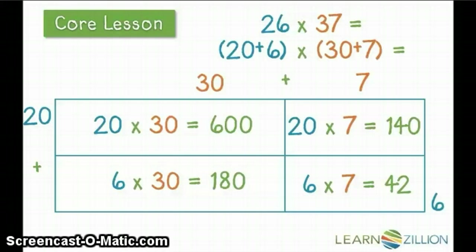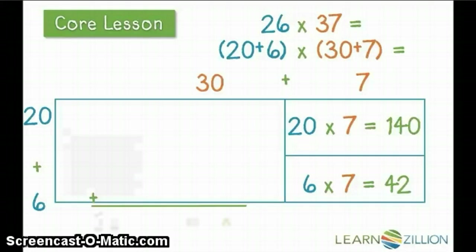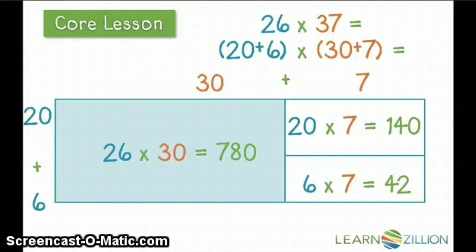Now we need to put all of those pieces together to find the total of the large rectangle. Here's how I'm going to do it. I'll begin by combining the column of 30 in each row. So our first section is 20 rows of 30, totaling 600, and 6 rows of 30, totaling 180. Now when I add those two together, I get a total of 26 rows of 30 in each row for a total of 780.